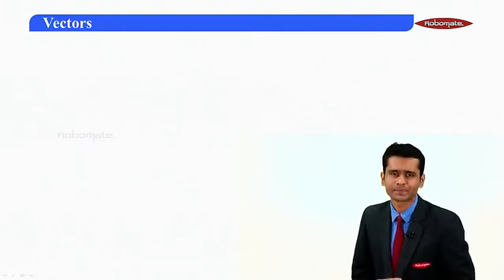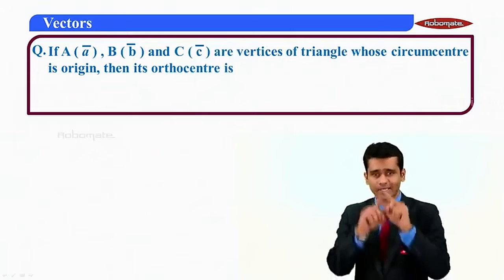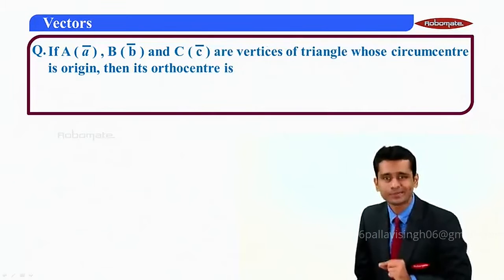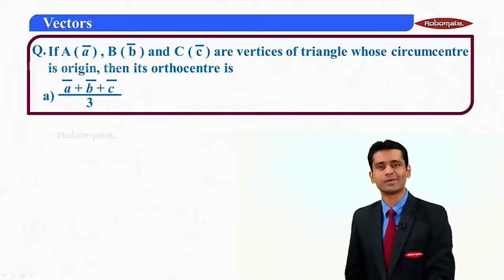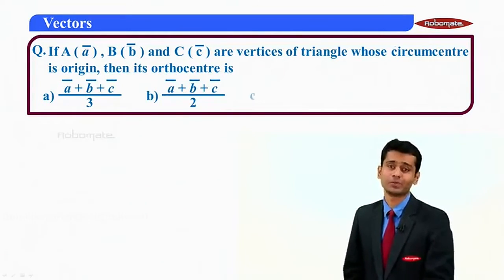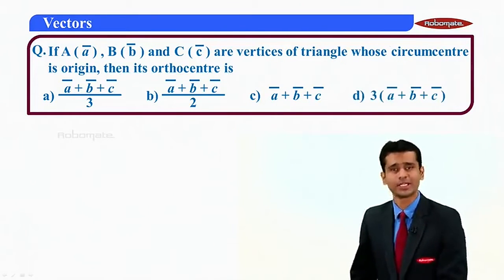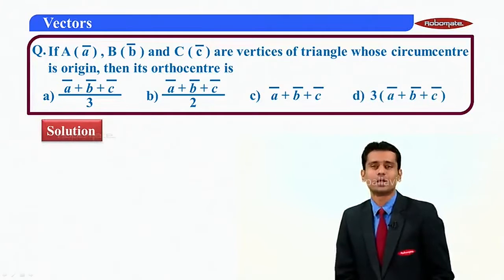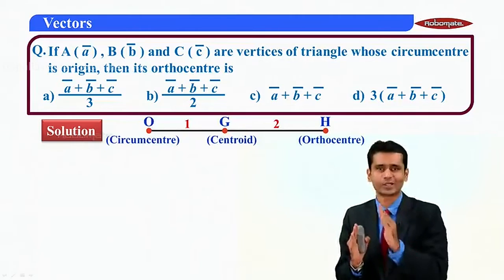Let us see the first question. The question says: if A (a-bar), B (b-bar), and C (c-bar) are the vertices of a triangle and the circumcenter is the origin, then what is the orthocenter? Option A: (a-bar + b-bar + c-bar) / 3. Option B: (a-bar + b-bar + c-bar) / 2. Option C: a-bar + b-bar + c-bar. Option D: 3 × (a-bar + b-bar + c-bar).